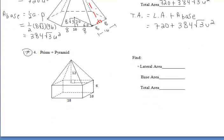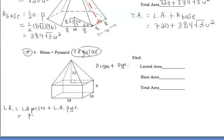For number four, we want to find the lateral area of this compound figure — a rectangular pyramid sitting on top of a rectangular prism. To find the lateral area of the whole figure, we find the lateral area of the prism and add it to the lateral area of the pyramid. Since the pyramid is not regular, we cannot use the one-half perimeter times slant height formula. For the prism, we find the perimeter of the base times the height: 56 times 6 gives us a lateral area of 336.